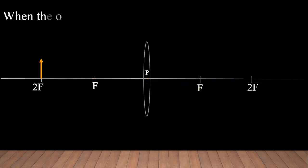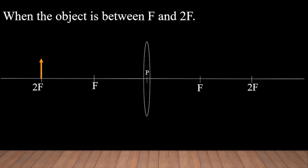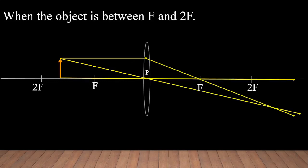Let us take the next case — when the object is between F and 2F. Any distance from P between F and 2F can be considered. The rays incident on this lens get refracted and the image is formed beyond 2F. You can see the image is real, inverted, and enlarged compared to the size of the object. As we approach with the object towards F, the image moves away from F.